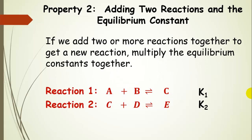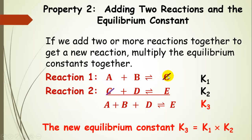Another property: we can add two equations together to get a new reaction and a new equilibrium constant. This is similar to Hess's law. We have reaction one and reaction two, each with their own equilibrium constant. When we add them together, C appears on both sides and cancels out, giving an overall reaction of A plus B plus D in equilibrium with product E. The new equilibrium constant is the product of K1 and K2, giving K3.